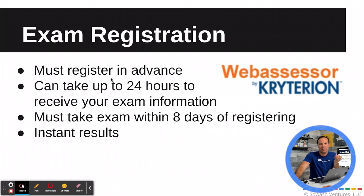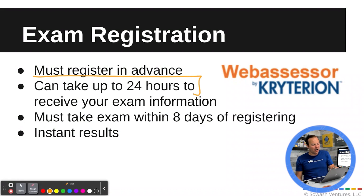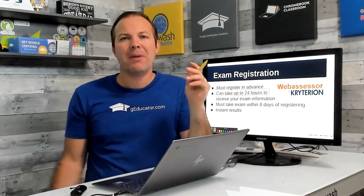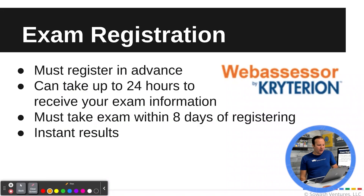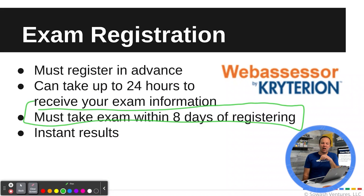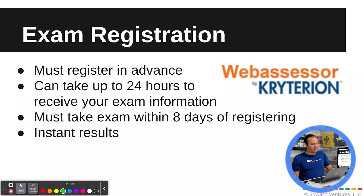Google has partnered with a company called Criterion to actually administer the test. You'll need to register with Criterion and create an account, where they also collect the $10 exam fee. One important thing to be aware of: it can take up to 24 hours to actually receive your test credentials, though it's typically much faster — usually a couple of hours. It's not a situation where you can just register and immediately take the test, so you need to plan that in. You must take your exam within eight days of registering; if you wait too long, your exam will expire and you'll have to repurchase it.